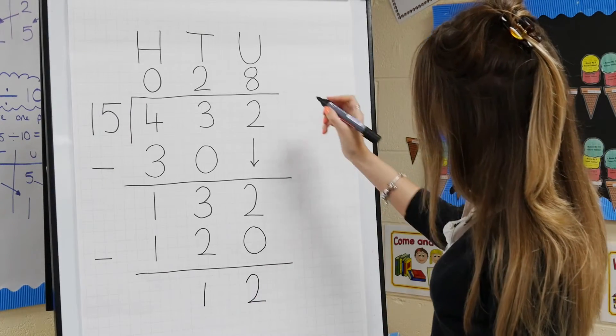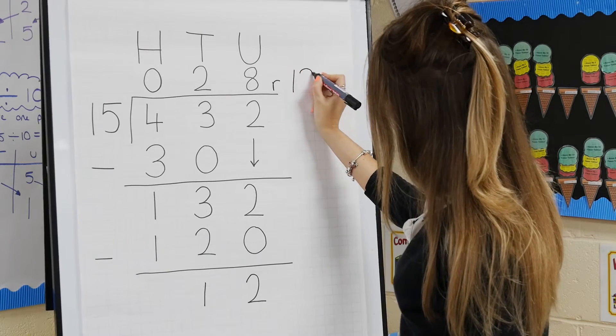Write R12 above the top line next to the 8 like this, to make a final answer of 28 remainder 12.